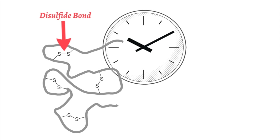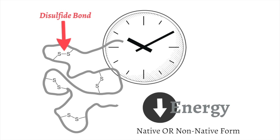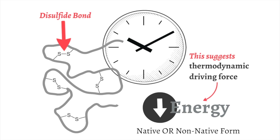Anfinsen then timed how long it took for the enzyme to refold, and this led to his discovery of an enzyme system that catalyzes disulfide bonds. When he introduced this system to an enzyme changed to have either an altered amino acid sequence or non-native disulfide bonds, he changed them into bonds that were more stable or lower in energy, which happen to be the native bonds. This suggests that the driving force for enzyme folding is thermodynamic, so that when the enzyme is in its native conformation, the energy of the total system is at a minimum, meaning that the native structure is the most stable possible.